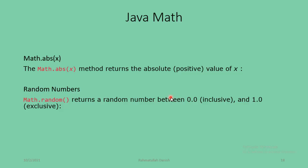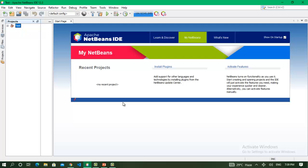math.random returns a random number between 0.0 inclusive and 1.0 exclusive. If we want to generate random numbers, we use the Java Math class math.random method. Let's jump to the NetBeans IDE and practically use these Math class methods.